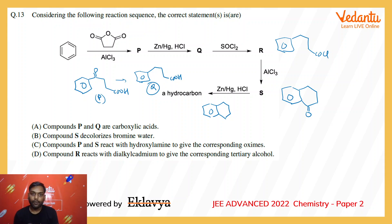Now checking the options: Option A says compounds P and Q are carboxylic acids. P and Q being carboxylic acids is true.